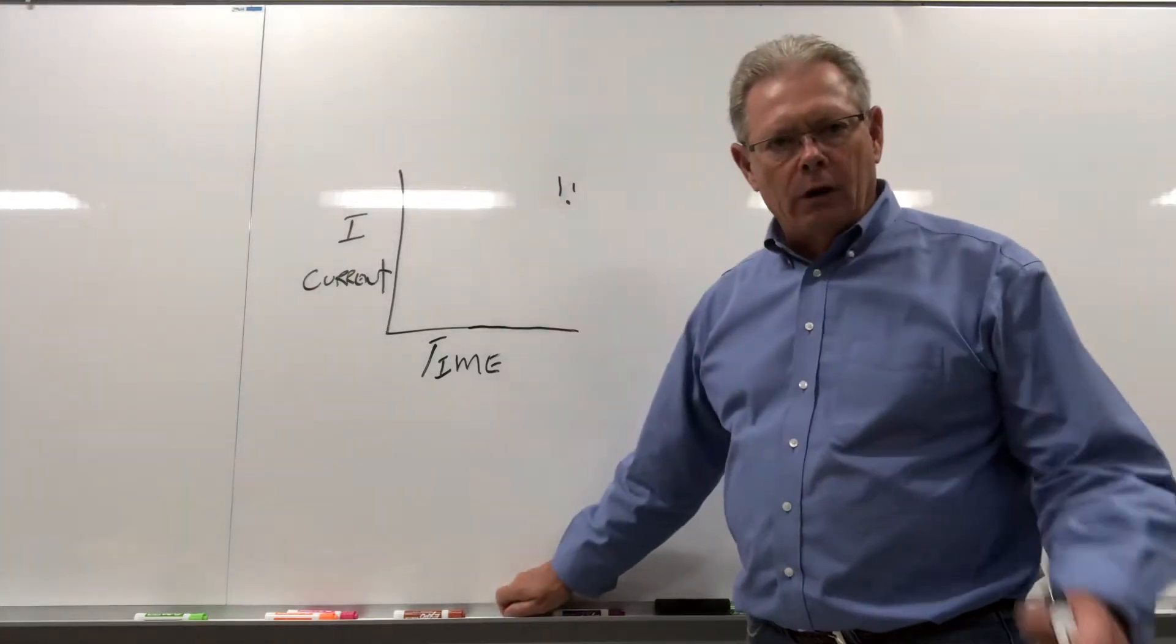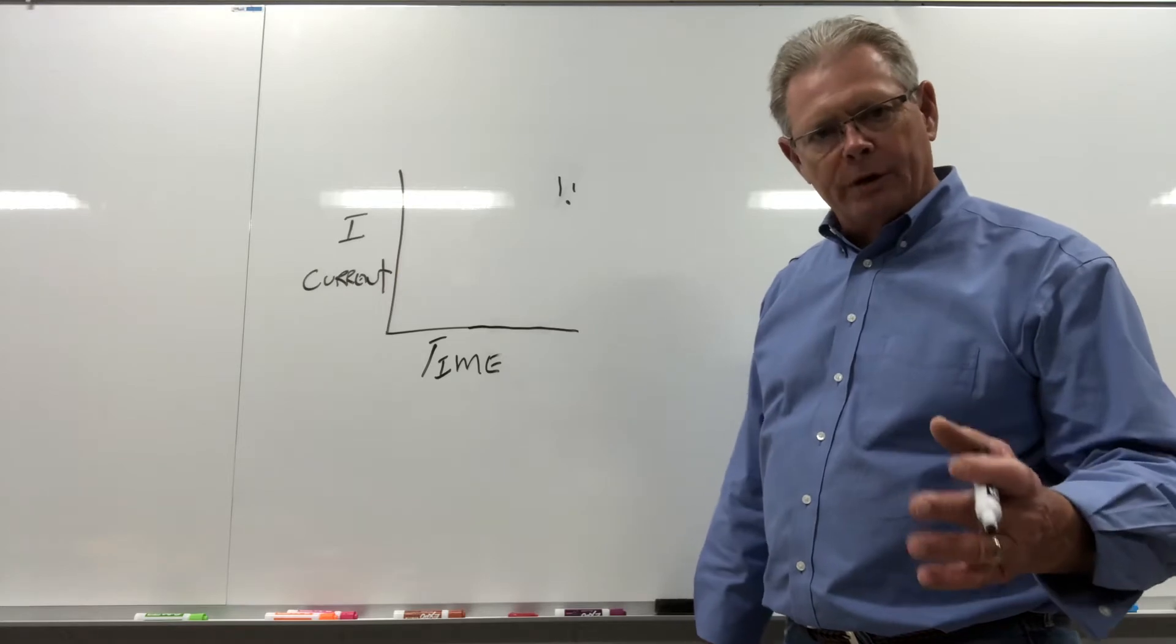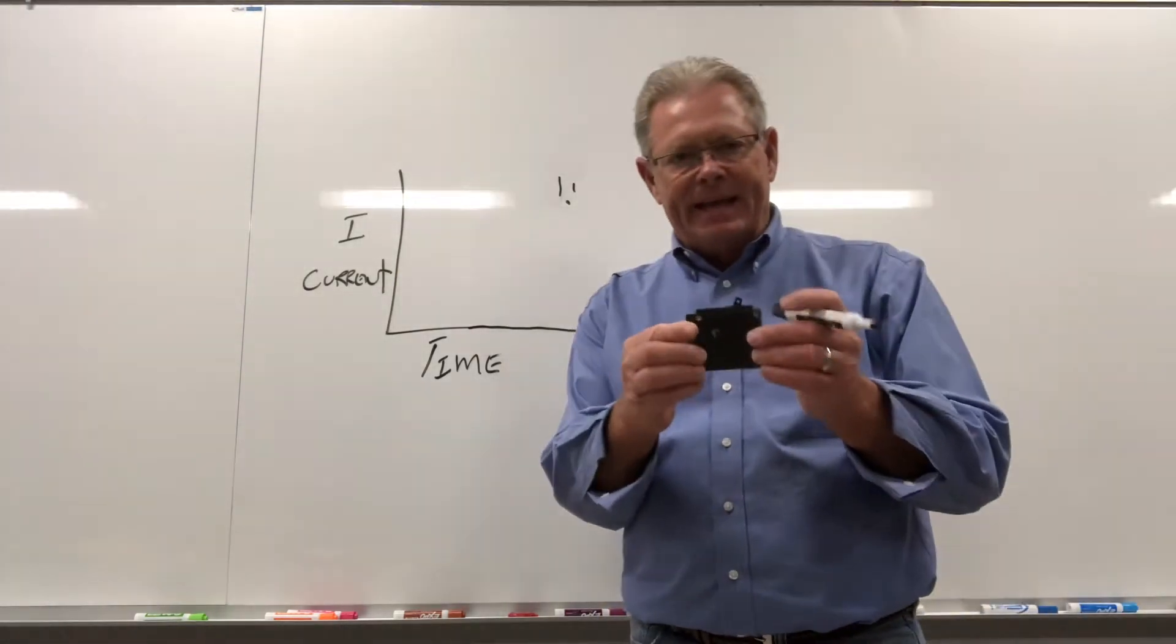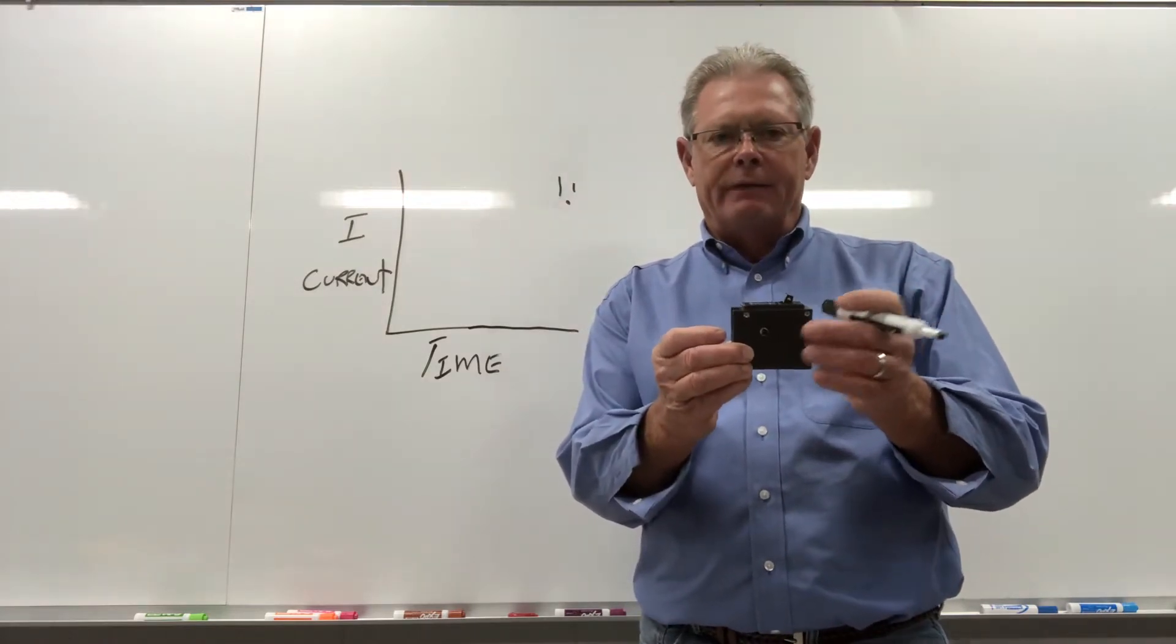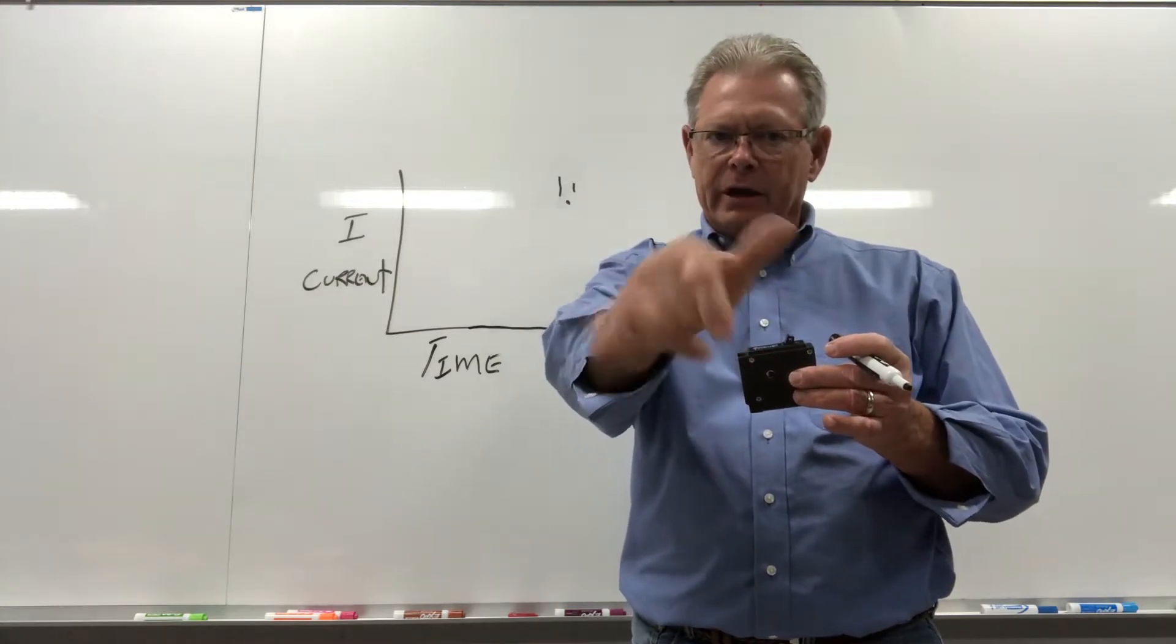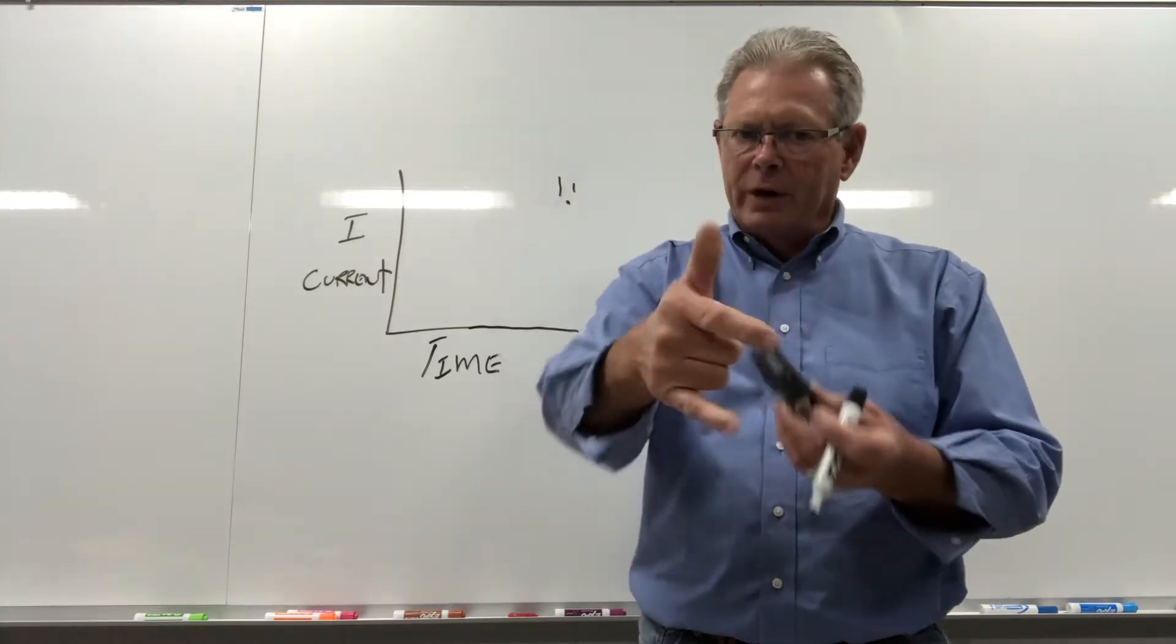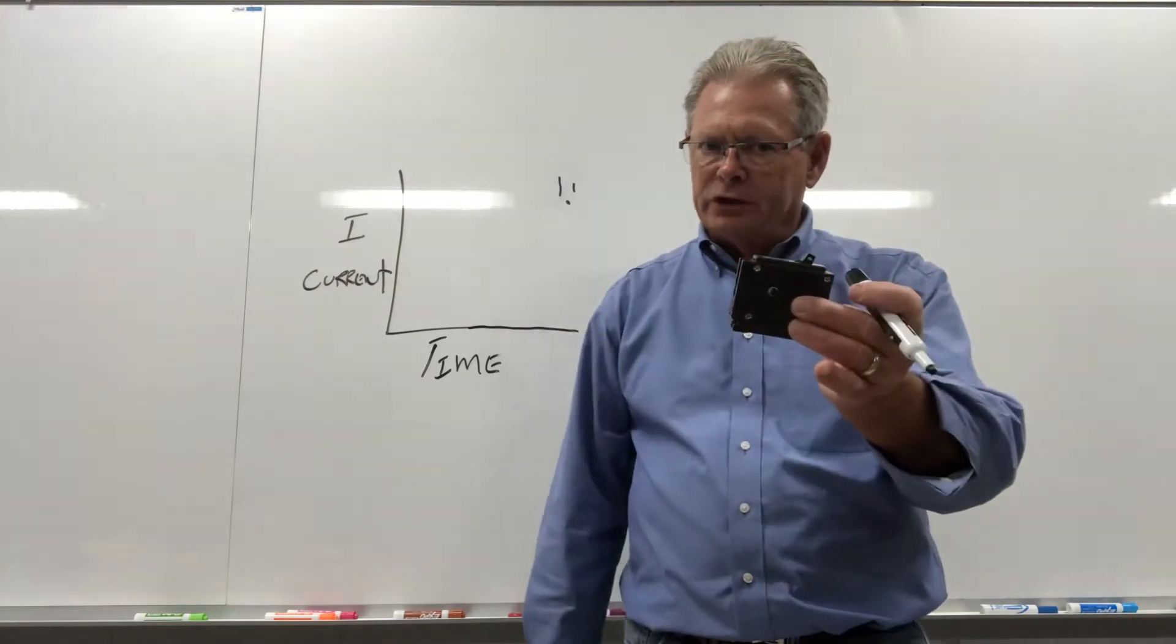Okay, we're going to talk about different conditions that will trip a circuit breaker. This is an inverse time circuit breaker. Inverse time means it works off heat. It works like a seesaw. The higher the current, the quicker it trips. The lower the current is over the rating, the longer it takes to trip.